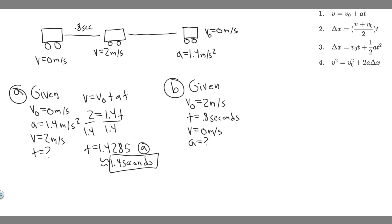And so, again, we're going to use the same exact equation. V equals v sub 0 plus a times t. But instead, we're going to be solving for a this time. So we know v is 0, which equals v sub 0, which is 2, plus the acceleration, which is what we're solving for, times t, which is 0.8.